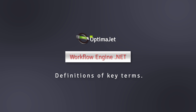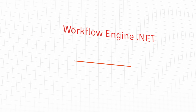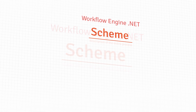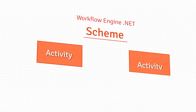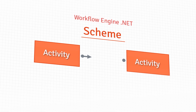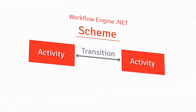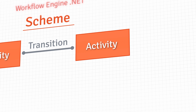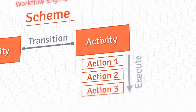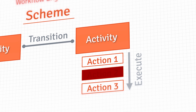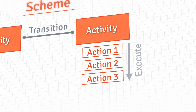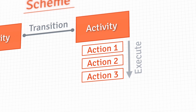Definitions of key terms for WorkflowEngine.net. A scheme is a description of the entire process; it consists of a set of activities connected by transitions. An activity is a representation of the document status and can contain one or more actions. An action contains method calls that are executed once the process reaches a specific activity.